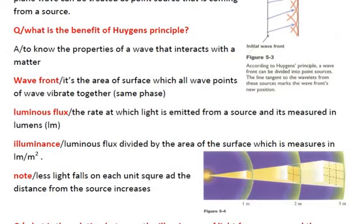However, illuminance is luminous flux divided by the area of a surface, which is measured in lumens per meter squared. So illuminance is luminous flux but for a specific area.